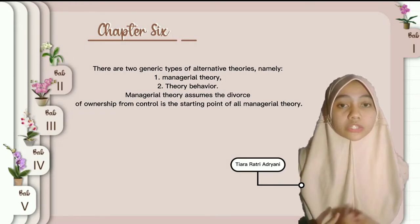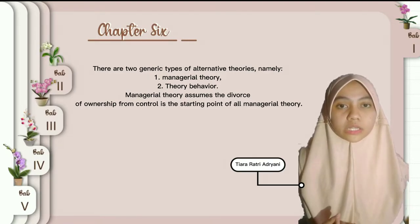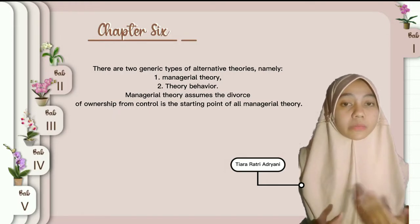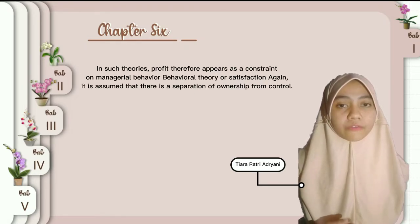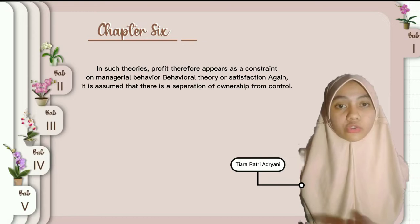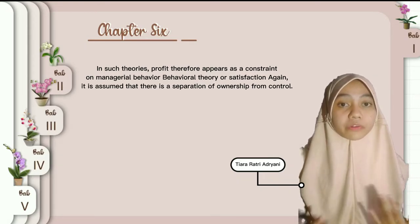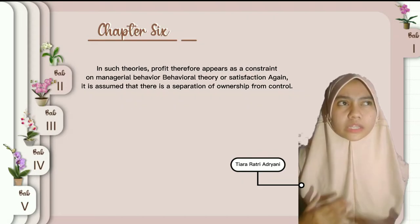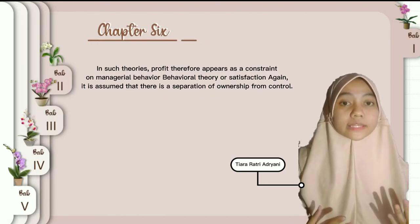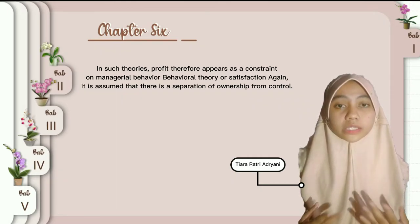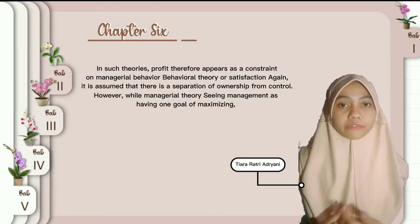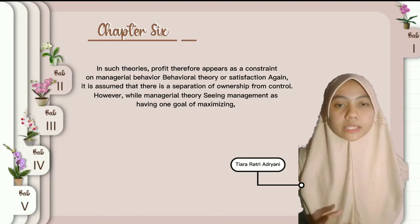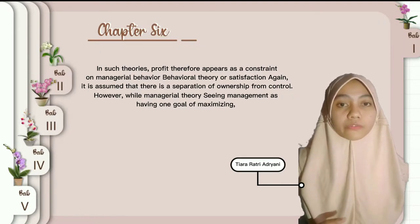Managerial theory assumes the divorce of ownership from control as the starting point. In such theories, profit therefore appears as a constraint on managerial behavior. A behavioral theory, or statistician approach, also assumes a separation of ownership from control. However, when managerial theory says management is pursuing one goal of maximizing.